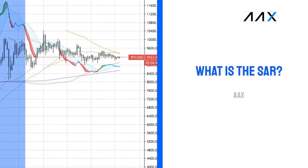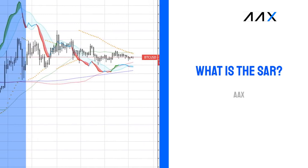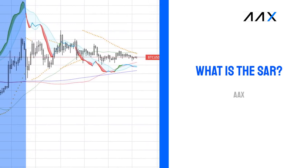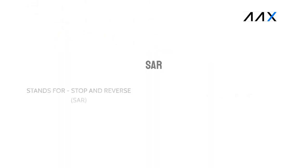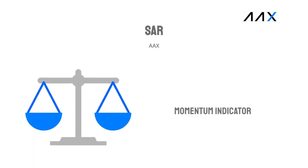In the video today, we're going to be looking at what is the SAR parabolic. SAR stands for stop and reverse parabolic. The SAR parabolic is a momentum indicator, otherwise known as a lagging indicator.